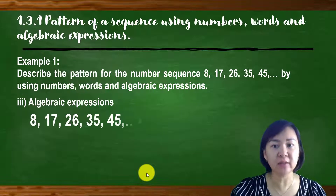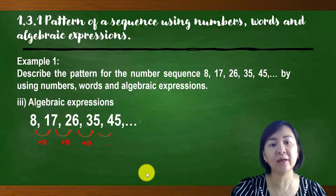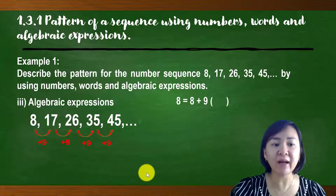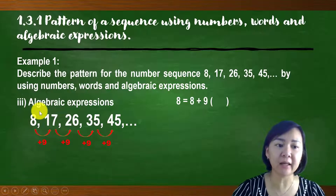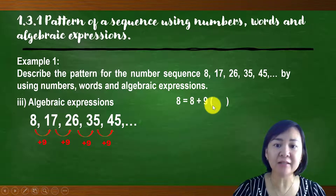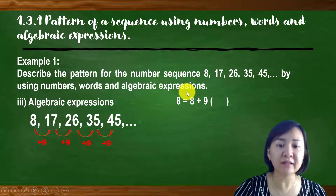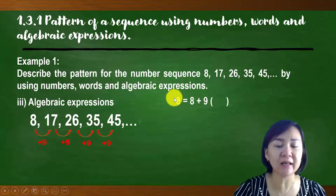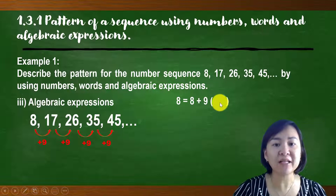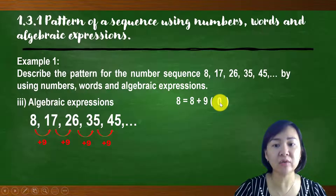For this sequence, the pattern is add 9, or plus 9. We write out the first number 8. To get the first term 8: 9 times 0 is 0, and 0 plus 8 gives us 8. For the second term 17: starting with 8 plus the pattern 9, if we have 1 multiplied by 9 which is 9, plus 8, we get 17.